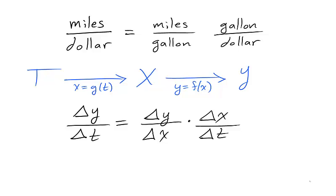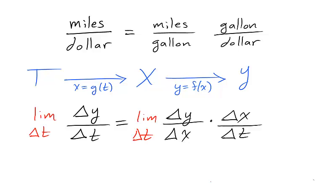Our example highlighted how average rates of change are multiplied through composition. But we are not interested in averages, we are interested in instantaneous rates of change, derivatives.